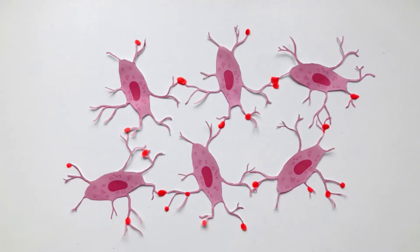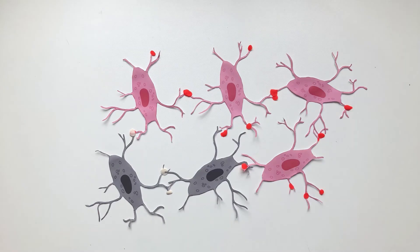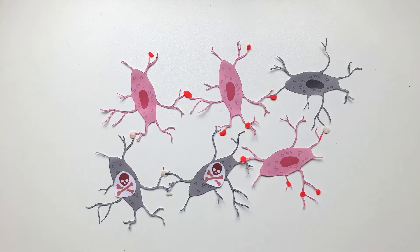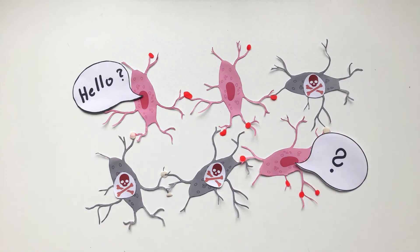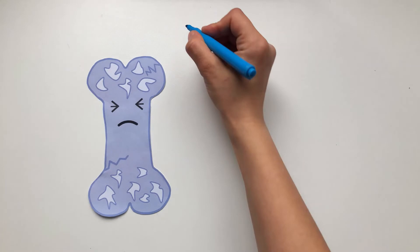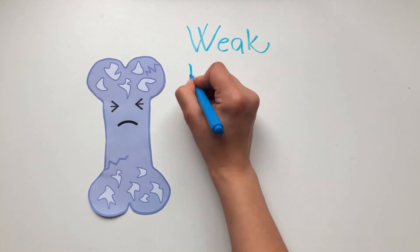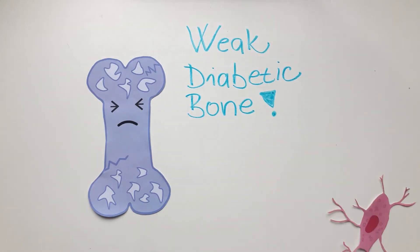In diabetic bone, the remodeling process is often imbalanced. One of the diabetic effects on bone vitality is the early osteocyte cell death. When there is a higher proportion of dead osteocytes, the communication is corrupted. Then osteocytes cannot maintain a proper remodeling process, which can be one of the reasons for weaker bone in diabetes mellitus.